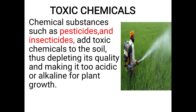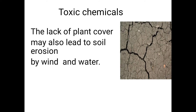Acidity in the soil reduces plant growth. Alkaline materials, insecticides and pesticides also reduce plant growth. These chemicals affect the insects and plant life. Taxing of chemicals also plays a role in soil pollution.